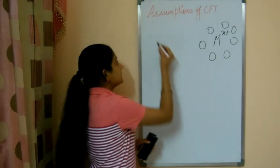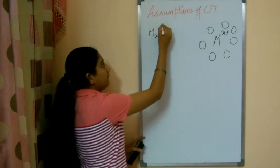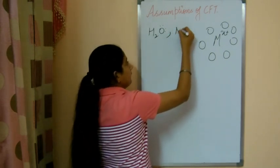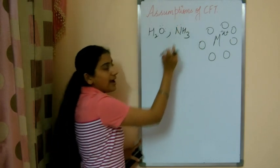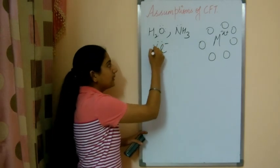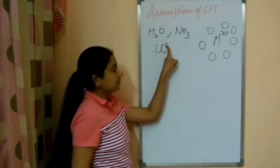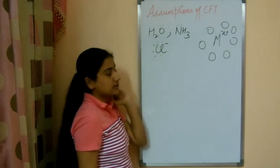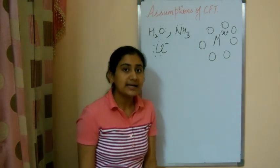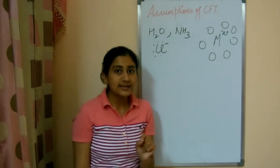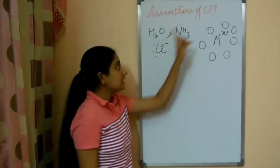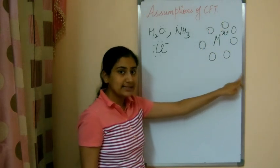We have seen many ligands, like water — a neutral molecule that has lone pairs and acts as a ligand in many complexes. Similarly, NH3 is a neutral molecule that also has a lone pair. And if we take a negatively charged ligand like chloride ion, it also has lone pairs and electron pairs. Crystal field theory says these ligands are considered to be point charges, as in electrostatic attractions, to apply the concept of electrostatic forces.